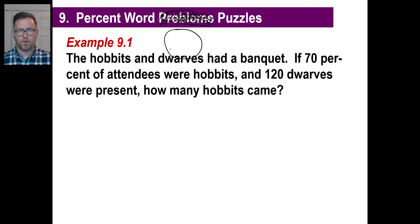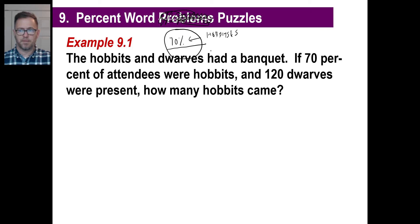70% of attendees were hobbits — there's 70% right there. Those are hobbits, or as some person would say, hobbitses. And 120 dwarves were present — that's the 120. Those are the dwarves.